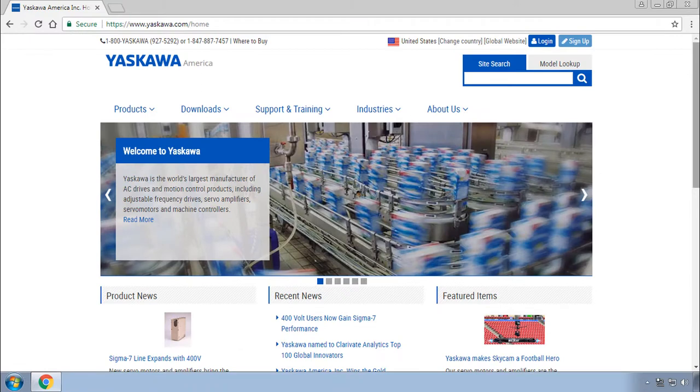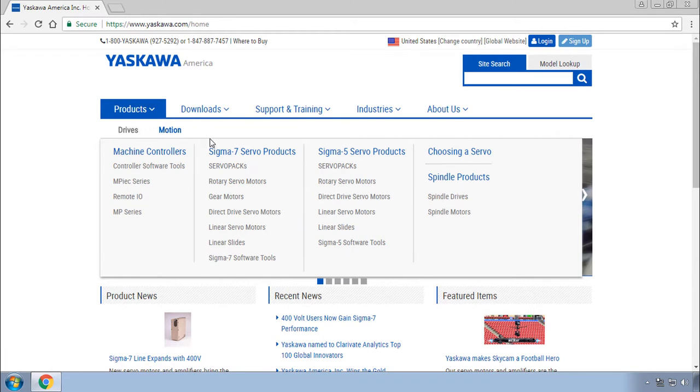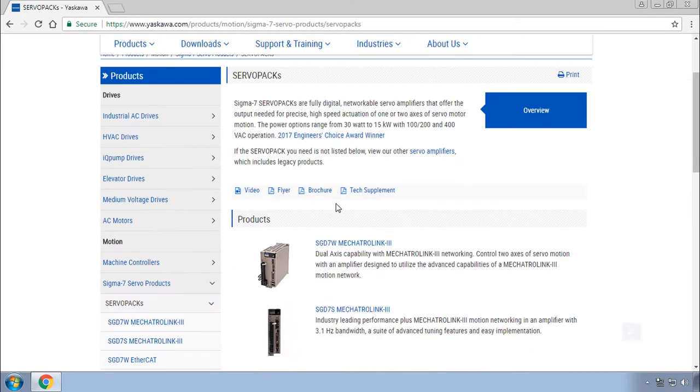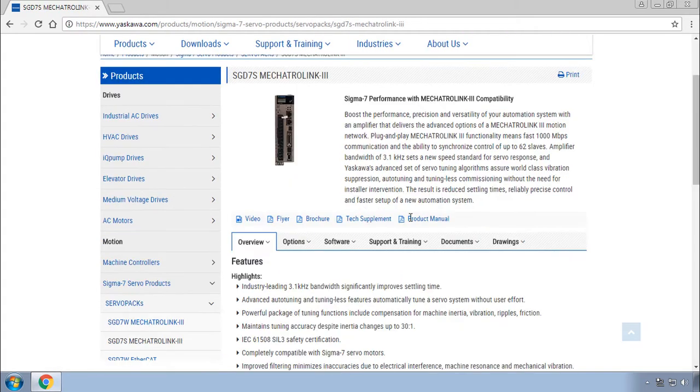Go to yaskawa.com, and under Products, go to Sigma-7 Servo, Servo Packs. Let's scroll down to the SGD7S. I'll be using this manual. The other Sigma-7 products have separate manuals, and while they are largely the same, there may be some differences.